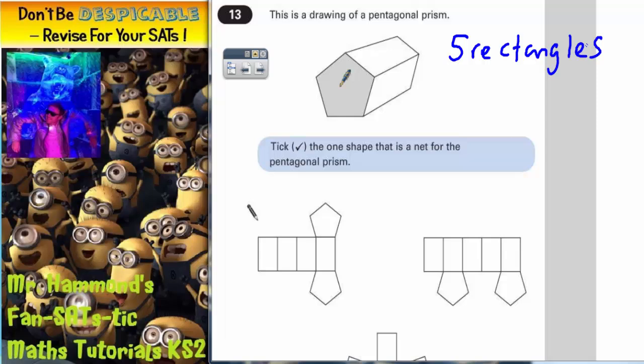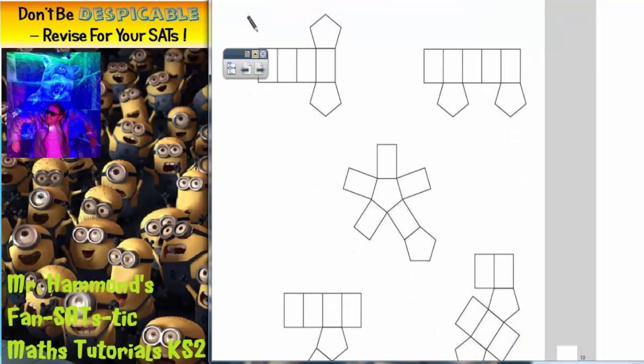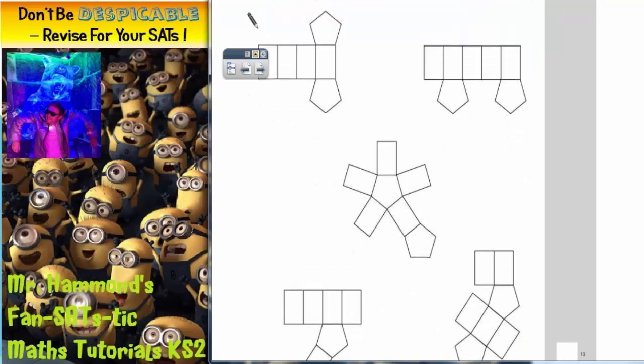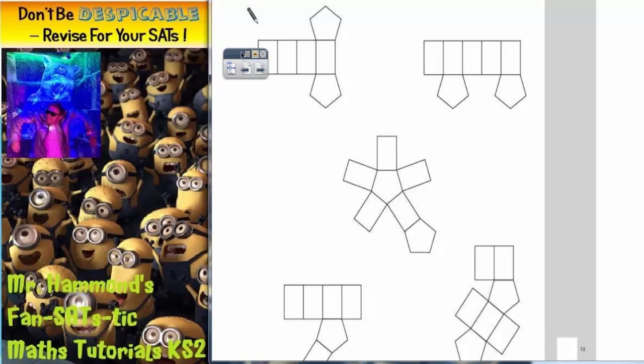We would have a pentagon at the front and a pentagon at the back. So we would have two pentagons. So our net must contain five rectangles and two pentagons. Now is there any shape that we can rule out from this straight away? So we're looking for five rectangles and two pentagons.